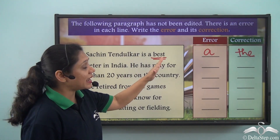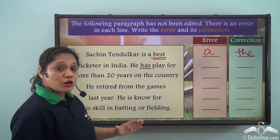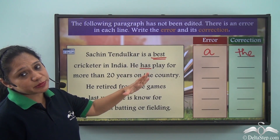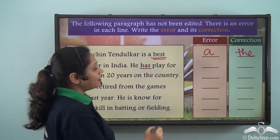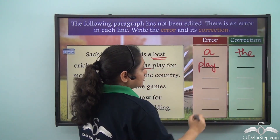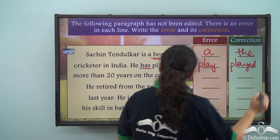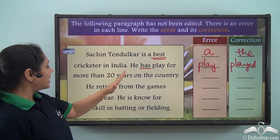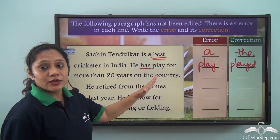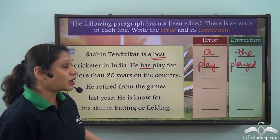'He has played for.' Whenever we have 'has' followed by a verb, it has to be the past participle form. So the error here is 'play' and the correct form should be 'played'. So: he has played for more than 20 years on the country. He cannot play 'on' the country — he has to play 'for' the country.